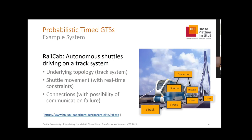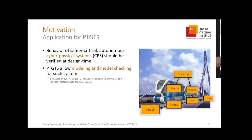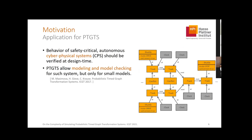We can use probabilistic time graph transformation systems for cyber-physical systems, safety-critical systems, and verification at design time. When PTGTS were first introduced, they came with a model-checking approach, but only limited to small models — say, 50 nodes. We could compute the probability of shuttles crashing, forming a connection, avoiding each other, or performing an emergency break, but the whole state space was evaluated.